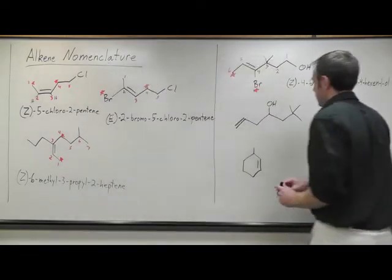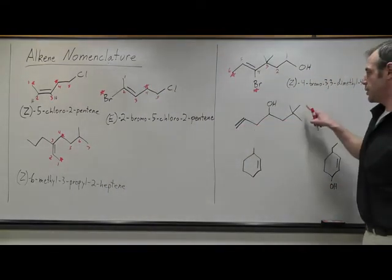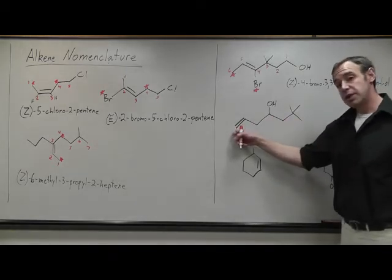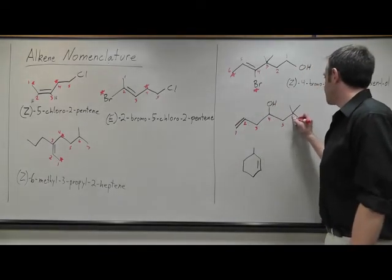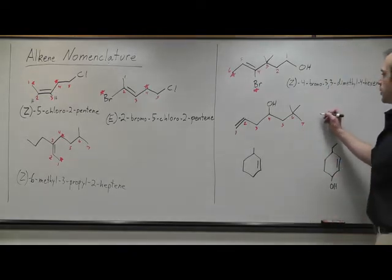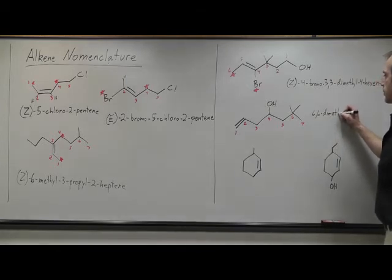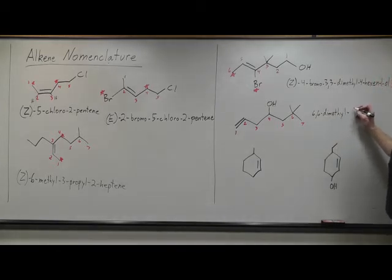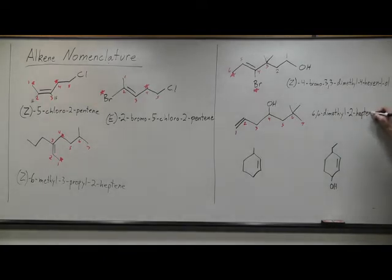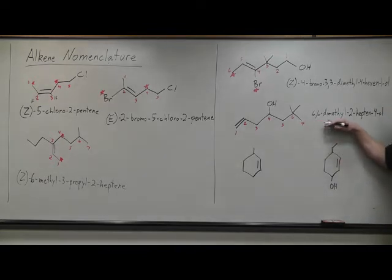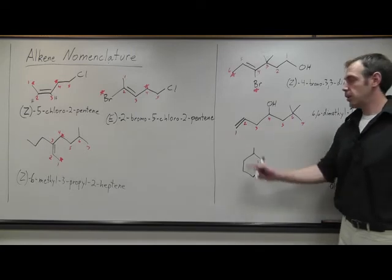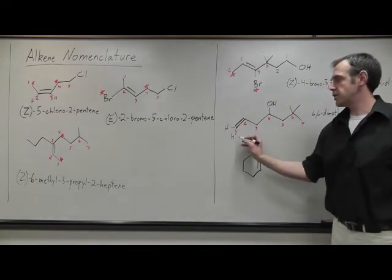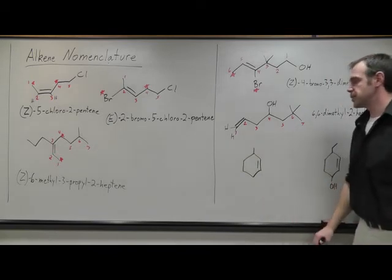Here's another example to try. One, two, three, four versus one, two, three, four. We'll number in such a way to give the alkene a lower number because either way the alcohol would be on four. We get 6,6-dimethyl-2-hepten-4-ol. This one does not, you can't assign priorities because both items bonded here are hydrogens. And so E and Z does not apply. So E and Z won't always apply.